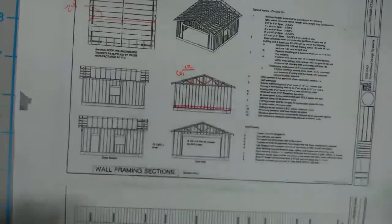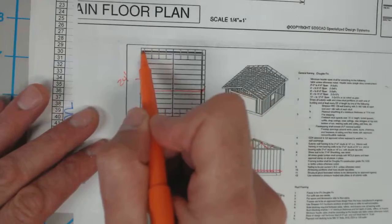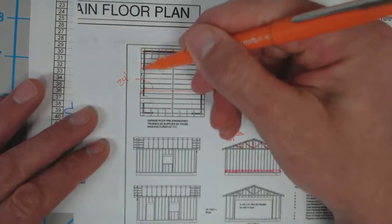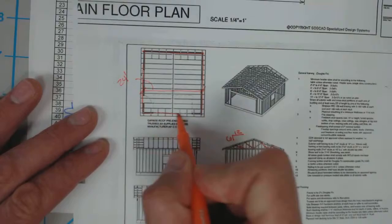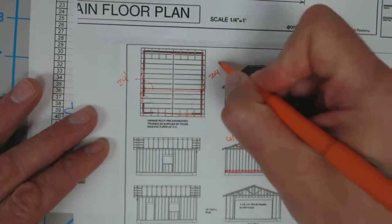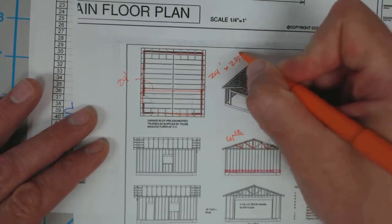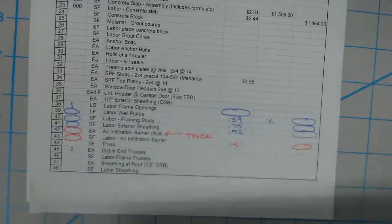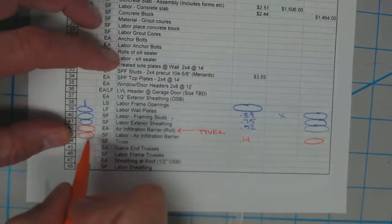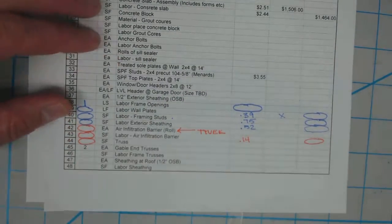So fairly straightforward, we've got our 24 foot by 25 foot area, and that area we can lift directly into our square foot of trusses from the unit.